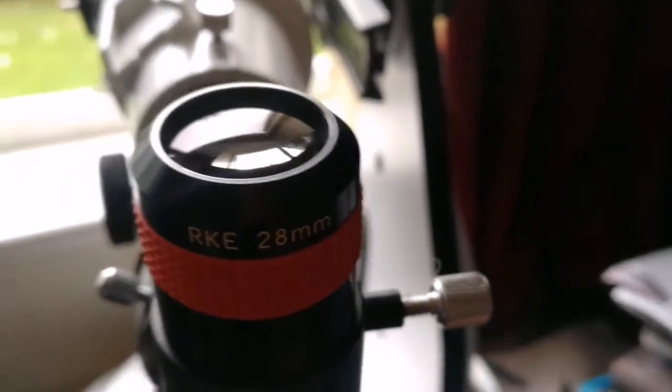Diagonal Everbright, very good one. And this is RKE 28 millimeter. I'm using the Skywatcher 102, or apochromatic refractor. This is our travel one. Really good telescope.